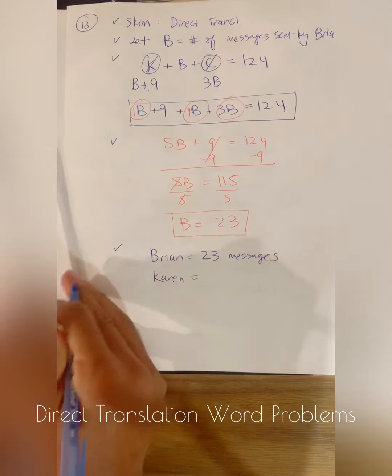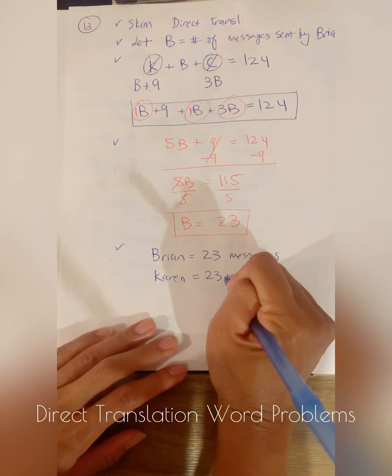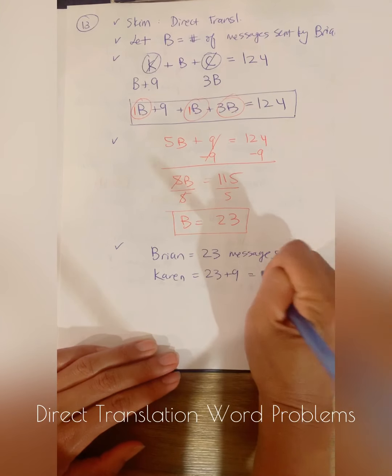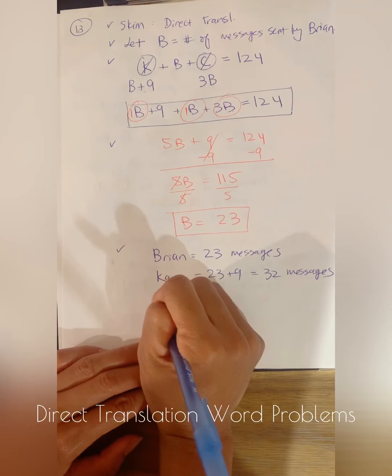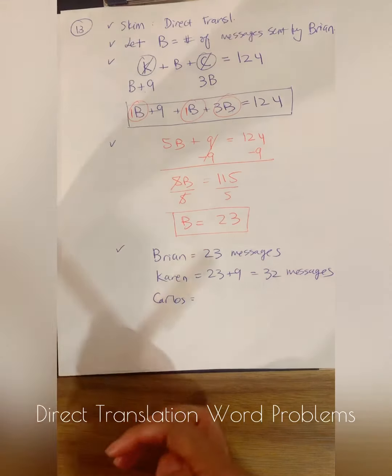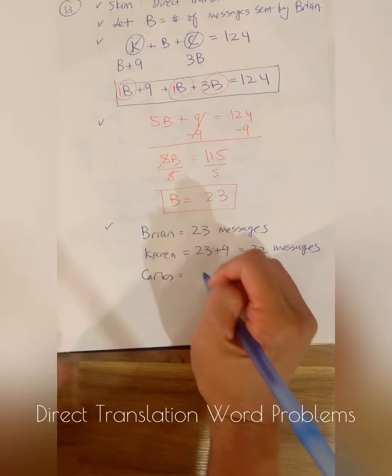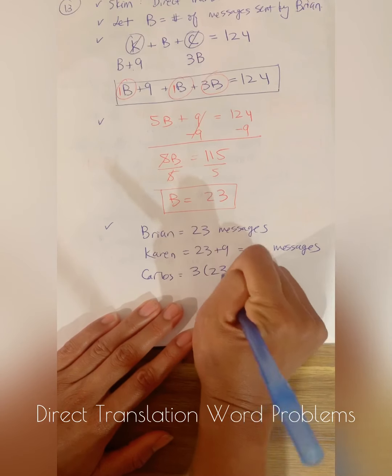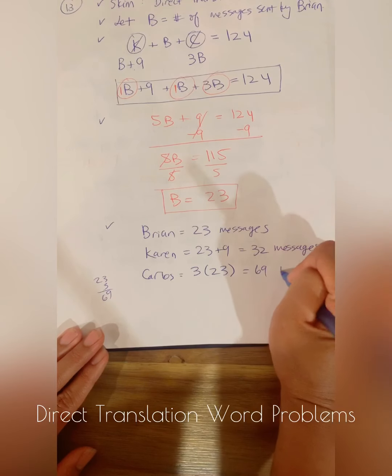We need to know what Karen sent. Well, Karen, we know, Karen sent nine more than Brian. So 23 plus nine, that's going to give us 32 messages. And then lastly, Carlos, we know that Carlos sent three times as many as Brian. So three times 23 is going to be 69 messages.